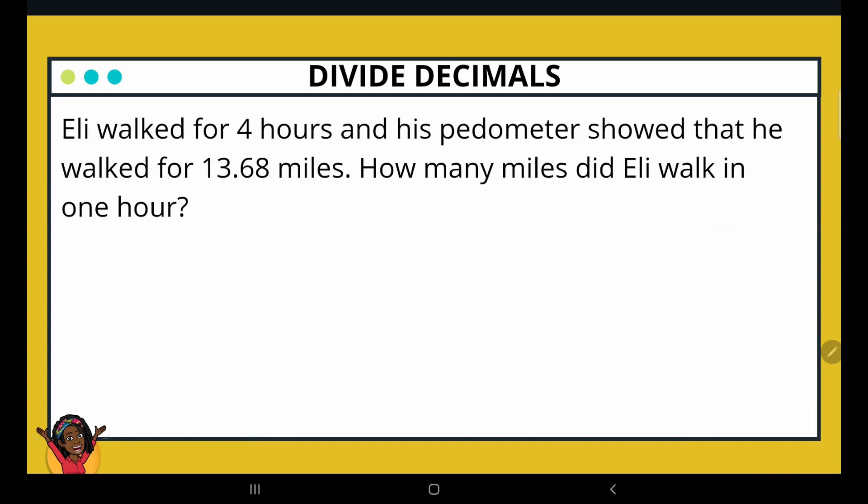Eli walked for 4 hours and his pedometer showed that he walked for 13.68 miles. How many miles did Eli walk in 1 hour? So he walked a total of 4 hours. And for those 4 hours, he ended up with 13.68 miles. So now to figure out how many miles he walked in 1 hour, we need to divide. We need to divide the total amount of miles traveled by how long it took him. So here we have 13.68 divided by 4.